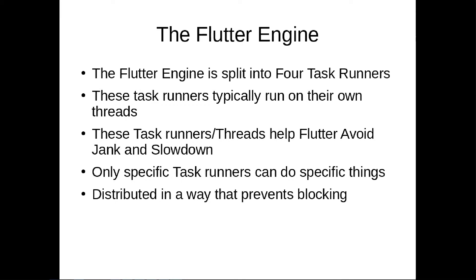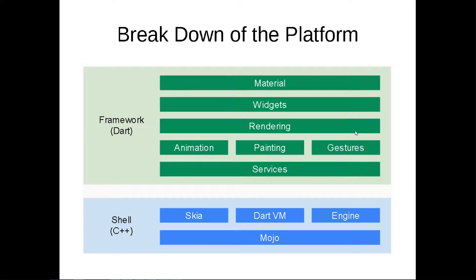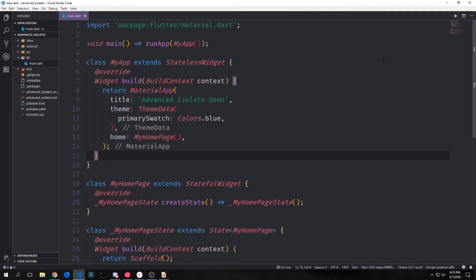We've got this delegation of power between each of the task runners, and as mentioned, these prevent the application from locking up due to blocking execution. Here's a visual representation of the actual Flutter framework — most of it is built in Dart, including things like material, widgets, the rendering engine, animation, painting, gestures, and services. Then we've got a C++ shell containing the Skia engine, the Dart virtual machine, the engine itself, and the mojo layer. If you want to learn more about how the Flutter framework is set up, I'll link a more technical description below.